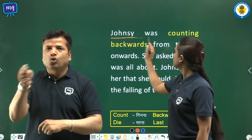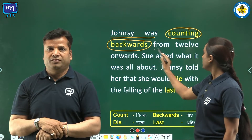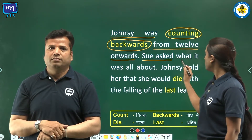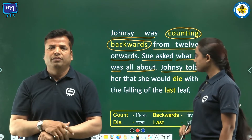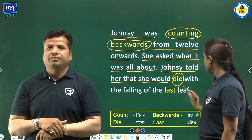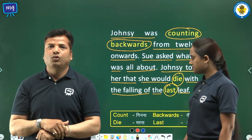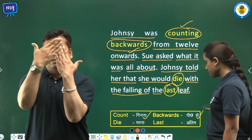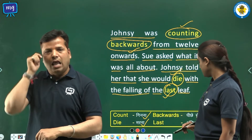Johnsy was counting backwards from twelve onwards. Sue asked what it was all about. Johnsy told her that she would die with the falling of the last leaf. Word meanings: count — ginna, backwards — piche se, die — marna, last — antim.